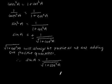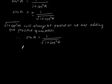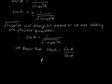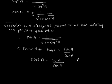Now, we know that tan a is equal to sin a by cos a, and cot a is equal to cos a by sin a. Therefore, we can say tan a is equal to 1 by cot a.